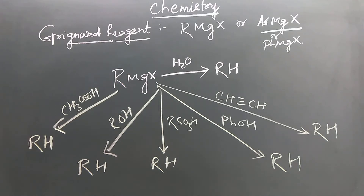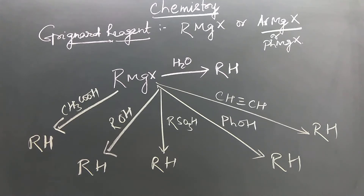Good evening students. Today we will be discussing Grignard reagent. Grignard reagent was discovered by Victor Grignard. It was first reported in the year 1900, and he received the Nobel Prize in the year 1912 for discovering one of the finest reagents in organic chemistry — the Grignard reagent.